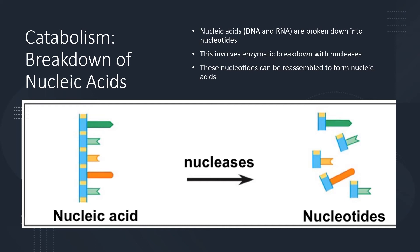Now let's talk about the breakdown of nucleic acids. Nucleic acids such as DNA and RNA can be broken down by nucleases into nucleotides — this involves enzymatic breakdown with nucleases. And these nucleotides can be reassembled to form nucleic acids later on.